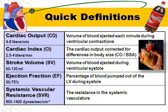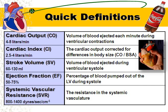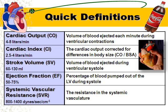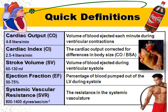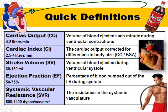Stroke volume is the volume of blood ejected during ventricular systole. Ejection fraction is the percentage of blood pumped out of the left ventricle during systole — remember that whenever your heart pumps, it doesn't completely empty, so there is almost up to 50% of the blood remaining. Systemic vascular resistance reflects how toned the vessels are: completely dilated gives a lower SVR number, while tight vessels restrict blood flow.